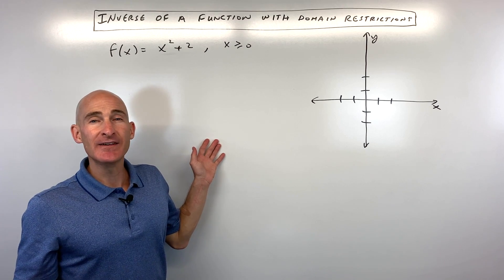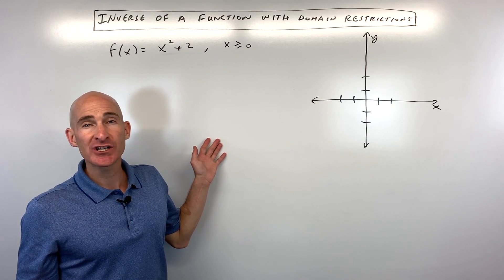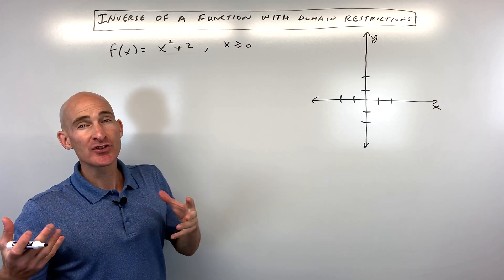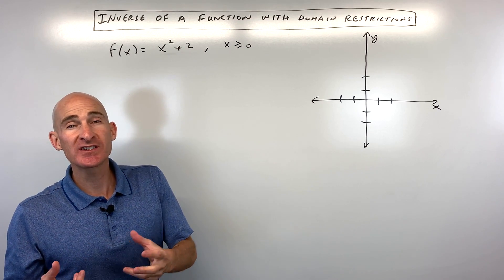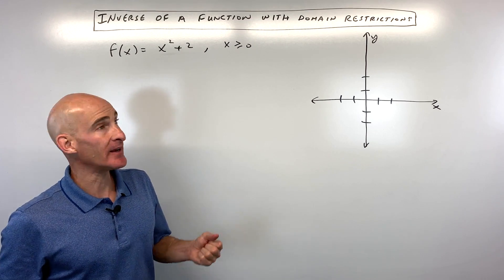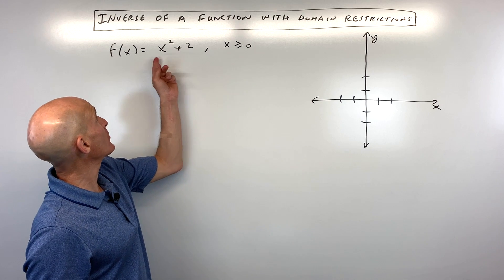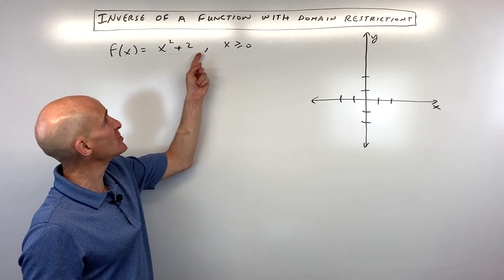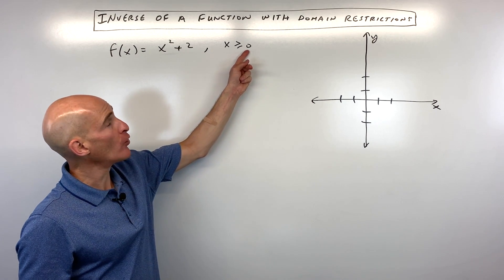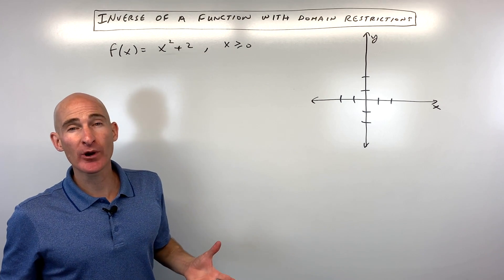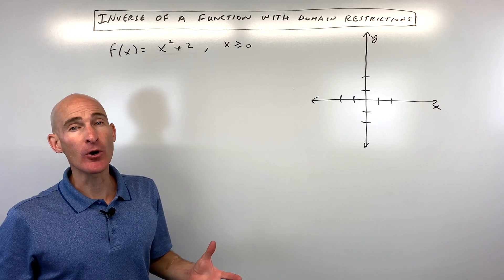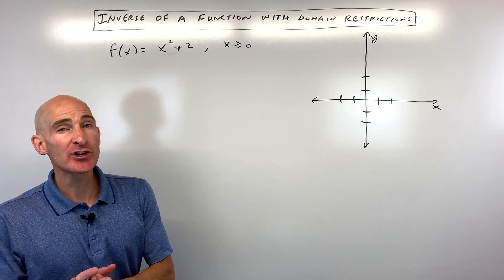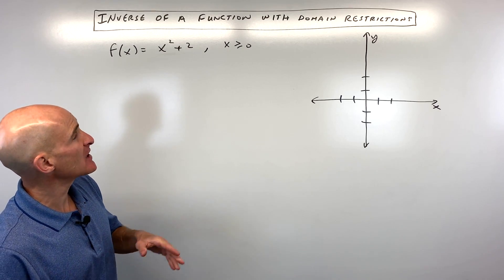What do we do when we find the inverse of a function and there are restrictions on the domain? Like this one right here: we have f of x equals x squared plus 2, but only where x is greater than or equal to 0. That's what we're going to talk about.